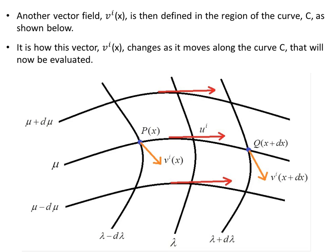We're going to have another vector field v, which is defined in the region of the curve c. We're interested in how this vector v changes as it moves along the curve c — how does it change as it goes from point p to point q along this congruence curve?